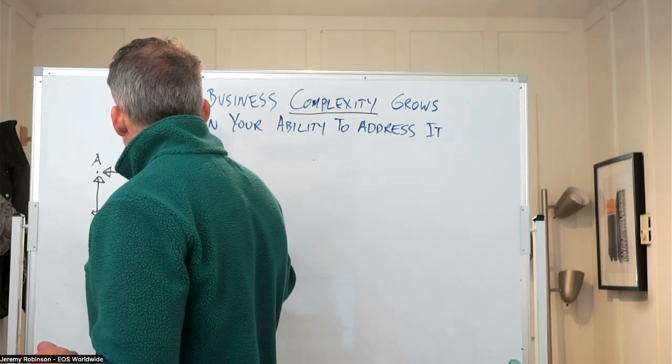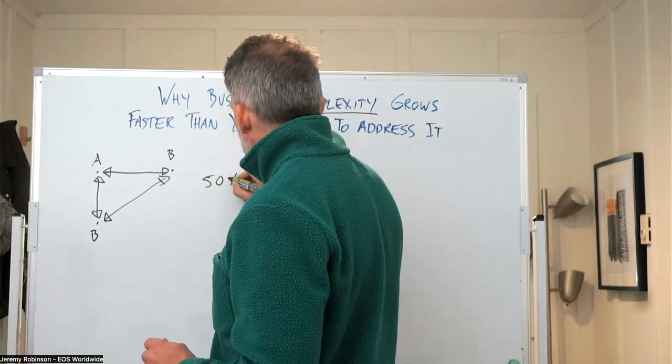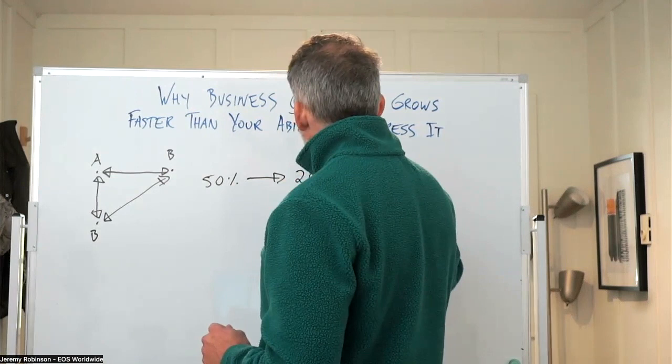So in other words, you have increased the size of the organization by 50%, but complexity has shot up by 200% in terms of the communication lines involved.